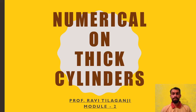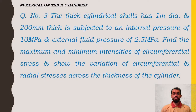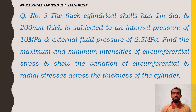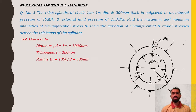Welcome to Strength of Materials. In this video, let us see the numericals on thick cylinders, as we have seen in the previous video. The first numerical: a thick cylindrical shell has a 1 meter diameter and 200 mm thick, is subjected to an internal pressure of 10 MPa and external fluid pressure of 2.5 MPa. Find the maximum and minimum intensity of circumferential stress and show the variation of circumferential and radial stresses across the thickness of the cylinder.